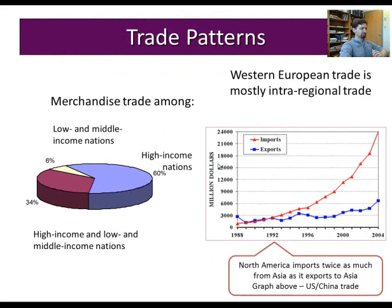The main trends are that high-income nations trade much more than low-income nations — the United States, Germany, and Europe in general trade much more than poor countries. North America imports more from Asia than it exports to Asia, though the trade deficit is not enormous. The United States tends to export most of its goods to Europe, while buying more and more things from Asia — a growing gap.